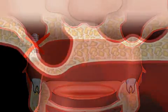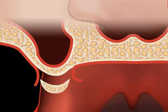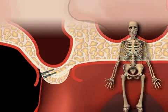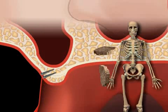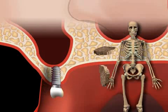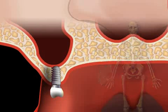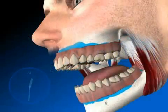In the animation, you see a so-called onlay plastic. The patient's own bone is extracted, for example from the jaw angle, and transplanted to the desired location. This re-establishes the sufficient bone height necessary for an implant, and thus for a fixed dental prosthesis. You can learn more about bone augmentation in the video by the same title.